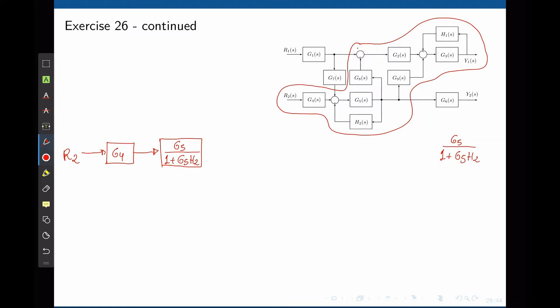Now let's follow the path that goes up to G8. We have the output of this block connected to G8. G8 goes to that sum with a negative sign.